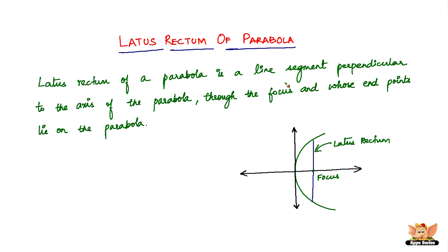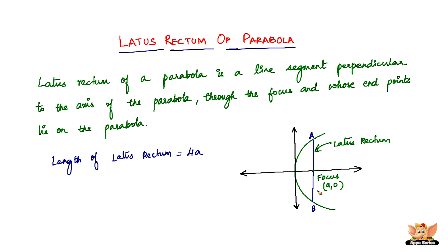The most important thing you need to know about the latus rectum is how to find its length. The focus in this case has coordinates (a, 0), and with respect to that, the length of the latus rectum is given by four times a. So whatever the coordinate 'a' is, it should be multiplied by four to get the length. If you name the endpoints A and B, then AB is the latus rectum and the length of AB would be 4a.